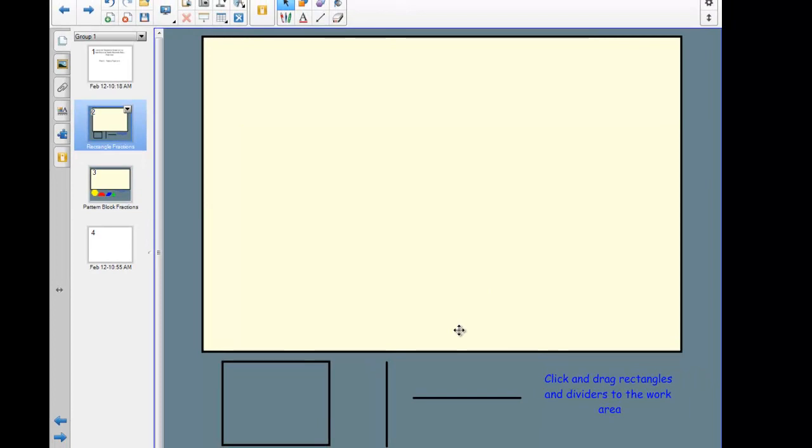You'll recall that on our SmartBoard we had a rectangle that we can drag onto the board. Let's start by adding 1/8 to 3/8. As we learned in the last screencast, we need to divide our box into eighths. Since I'm adding two fractions, maybe I should start with two rectangles - one for the 1/8, one for the 3/8.